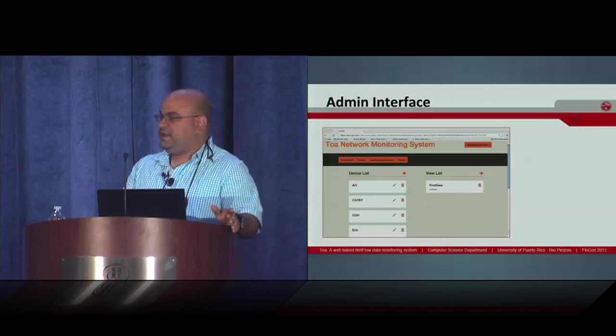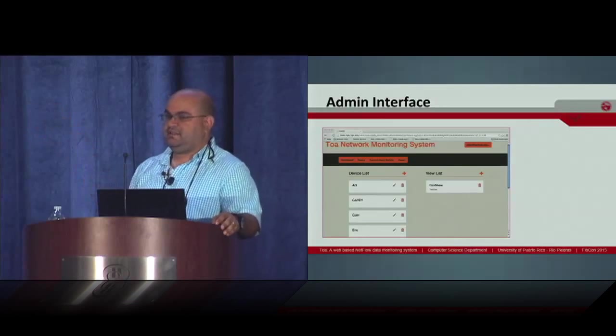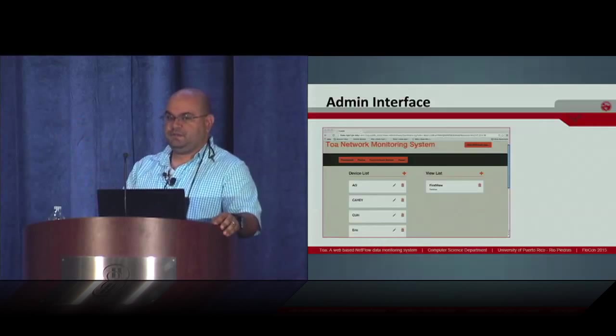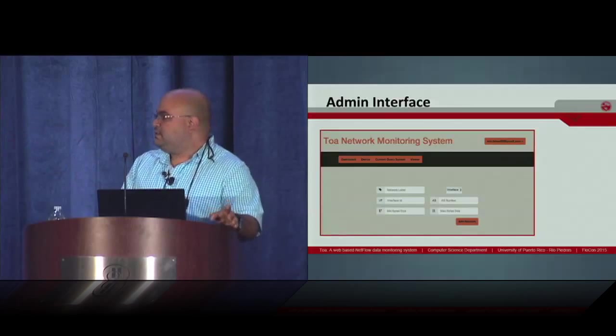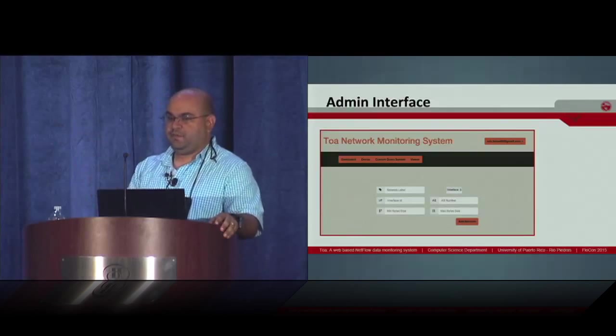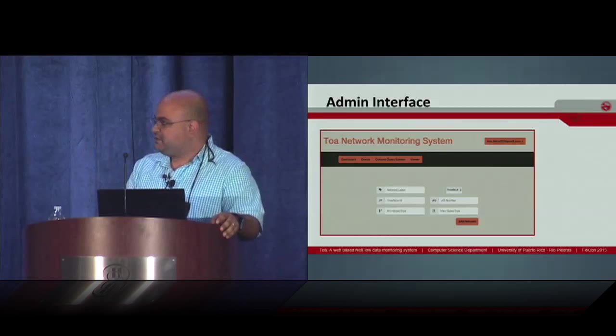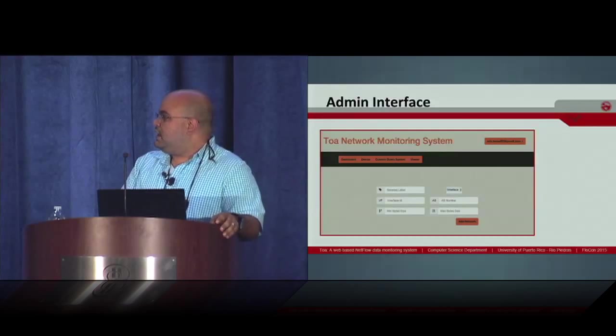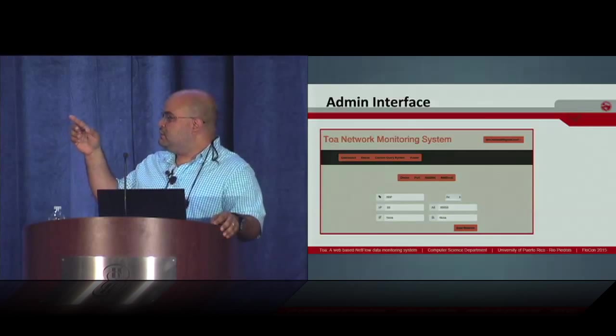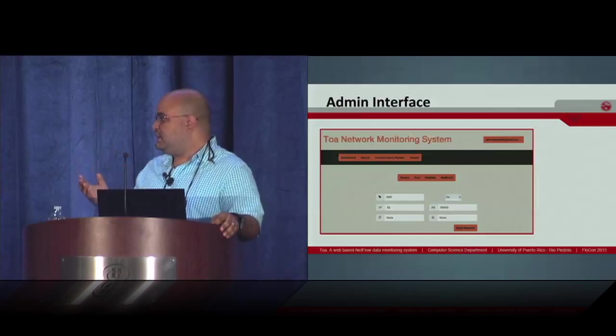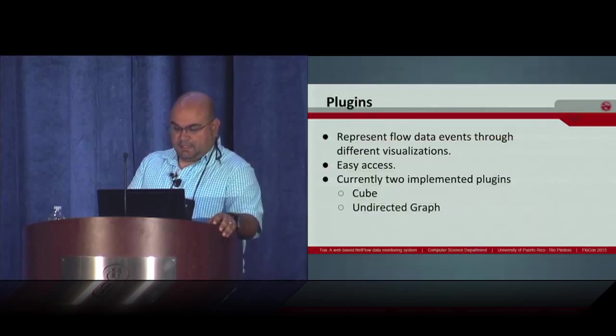This is the administration interface. It's really easy to use. You have a list of the networks or devices that you have defined, and a list of the views. When you want to add a network, you have to give it a label, insert the information that you want to use to monitor that network, for example, the interface number, the autonomous system number. Once you add the new network, you have the options to add new ports, the network-to-network connections, and if you want to add the network blocks.